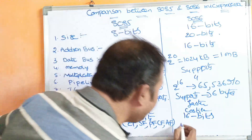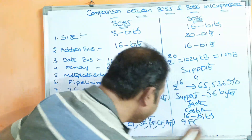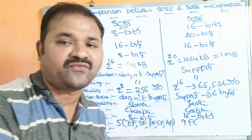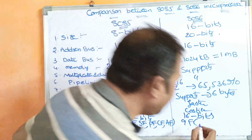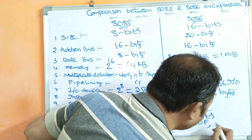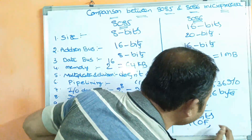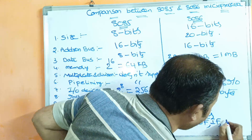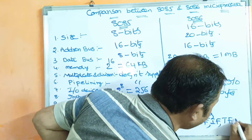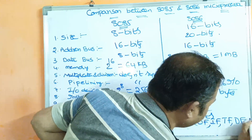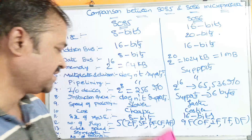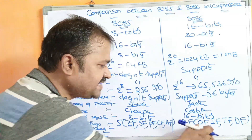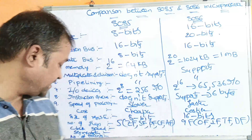Whereas the 8086 supports 9 flags. In addition to the same 5 flags as 8085, it supports 4 more: the Overflow flag, Interrupt Flag (IF), Trap flag, and Direction flag. So 8086 has 9 flags in total.